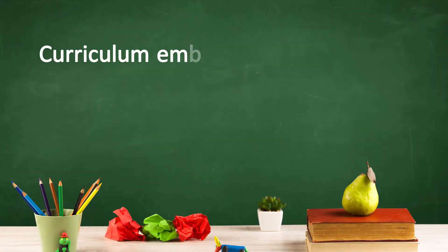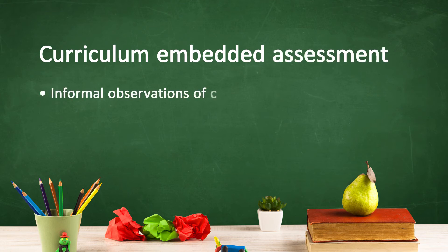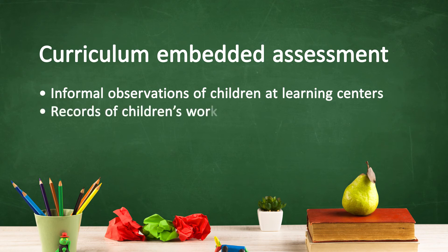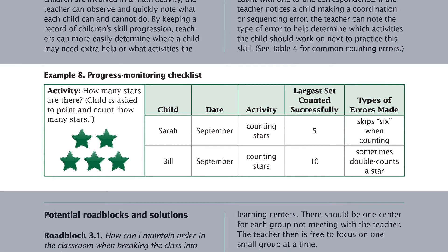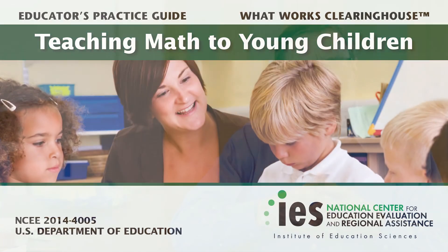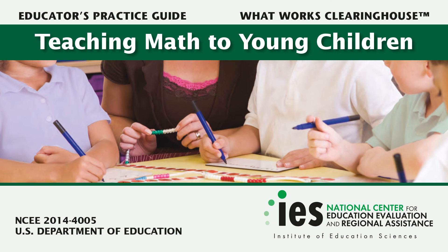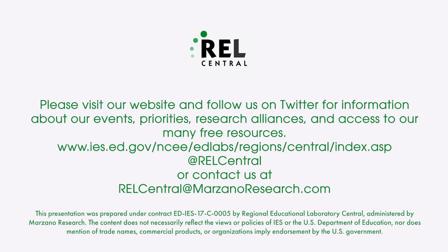This includes informal observations of children at learning centers or records of children's work during intentional activities. For example, teachers can use checklists or other forms to keep track of their observations. Checklists are helpful when trying to quickly observe and note what each child in a class can and cannot do when performing a specific task or activity. The recorded checklist helps teachers assess each child's progress more easily on a skill over time. For further information, please review the full practice guide and visit the REL Central website for more education research and resources to support schools and student outcomes.